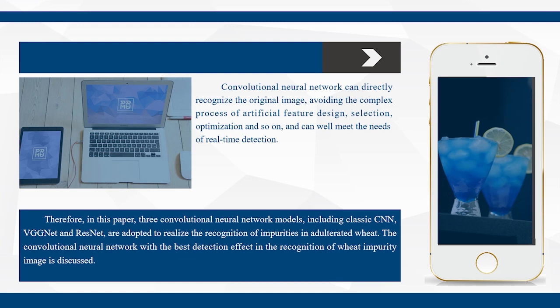Therefore, in this paper, three convolutional neural network models including classic CNN, VGGNet and ResNet are adopted to realize the recognition of impurities in wheat. This paper discusses which convolutional neural network has the best detection effect in the recognition of wheat impurity images.